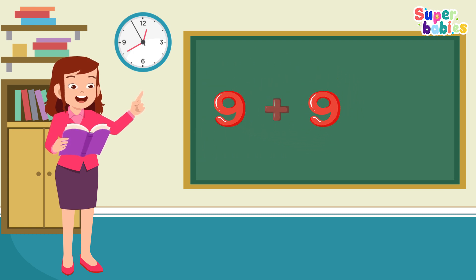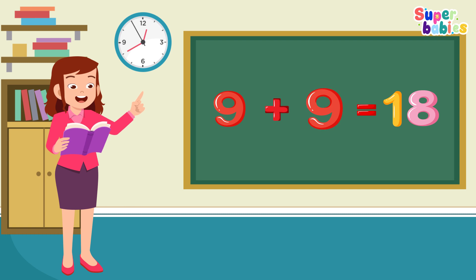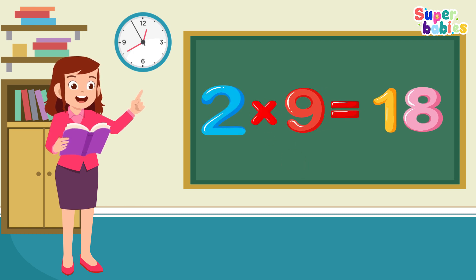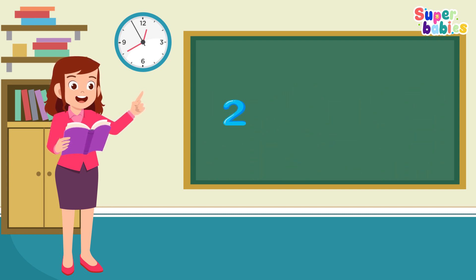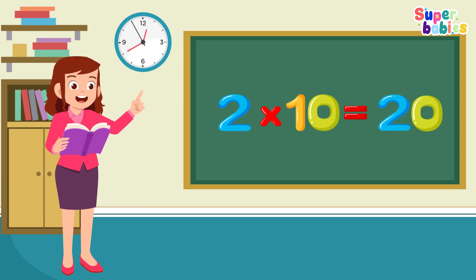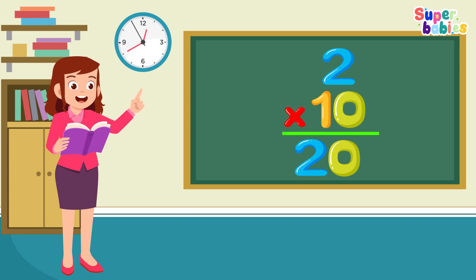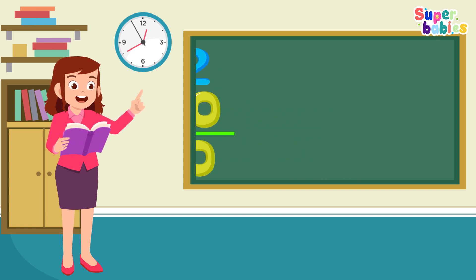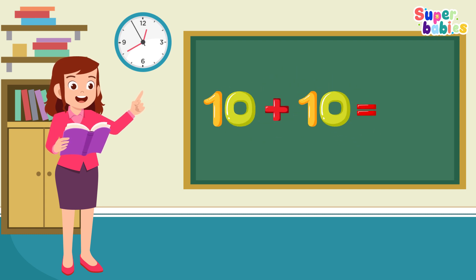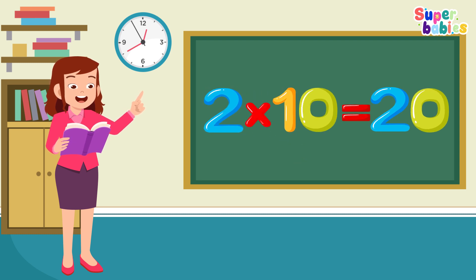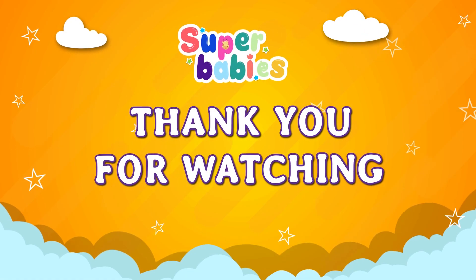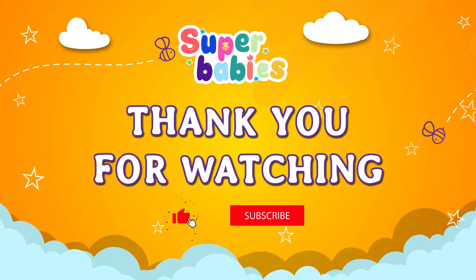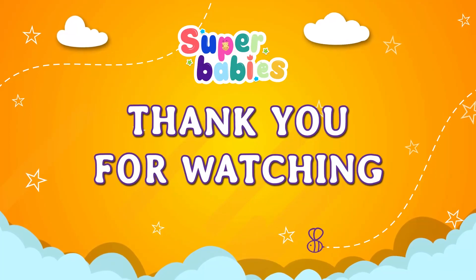Two, nine equals eighteen. One, two, nine equals eighteen. Two times nine equals eighteen. Two times ten equals twenty. Two, ten equals twenty. One, two, ten equals twenty. Two times ten equals twenty. Thank you for watching. Please like and subscribe to my channel.